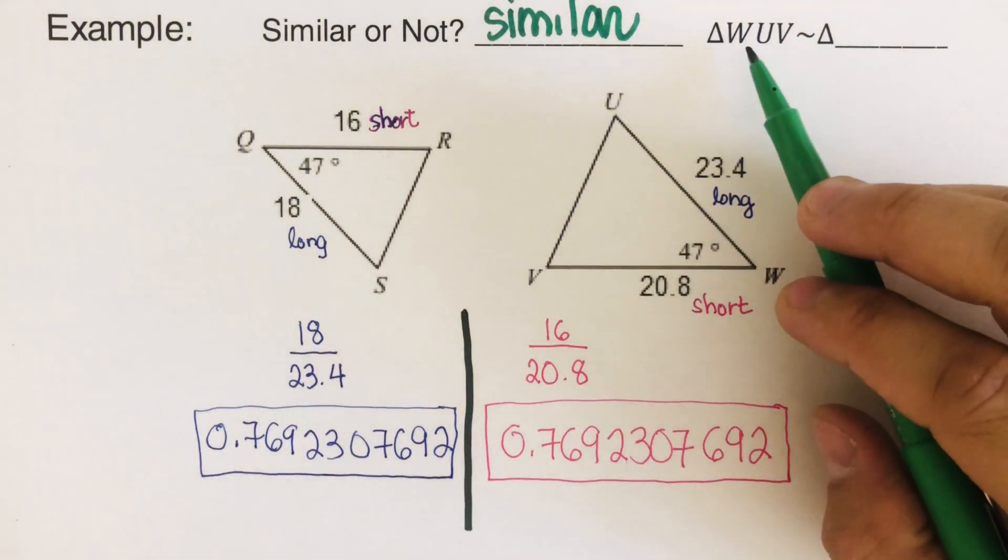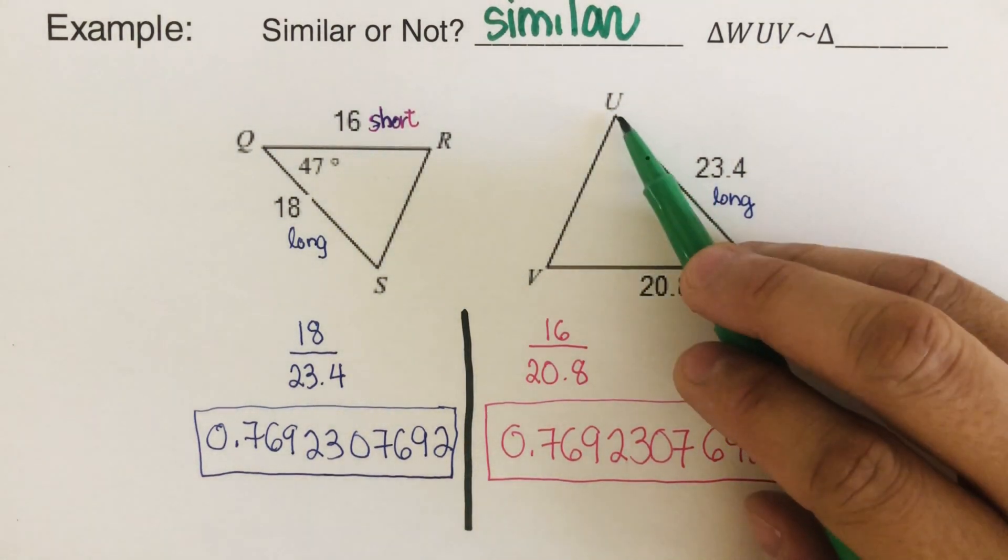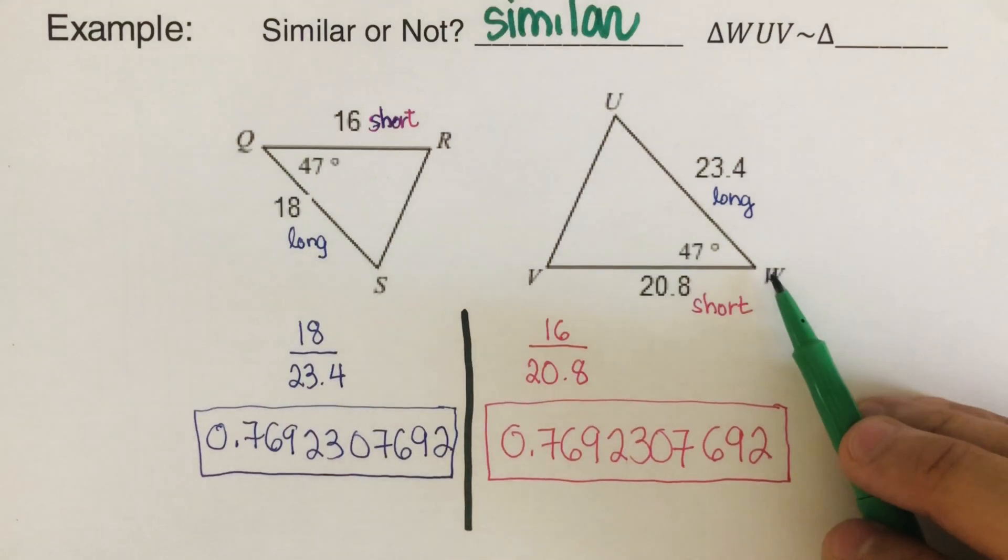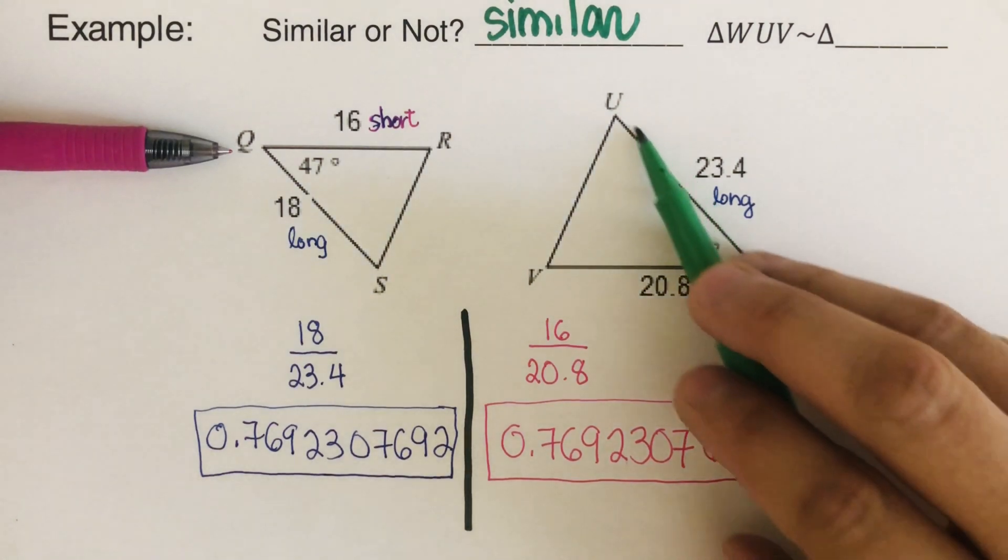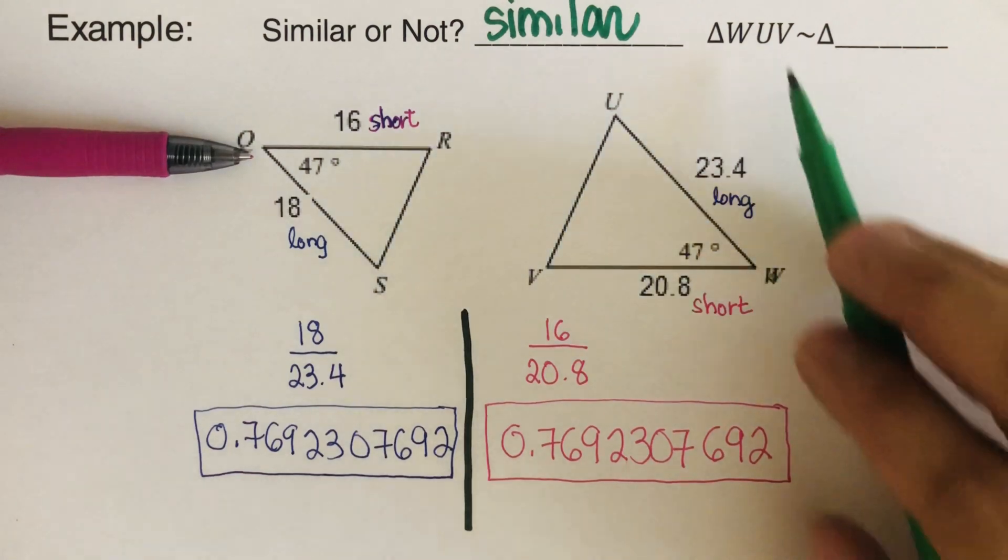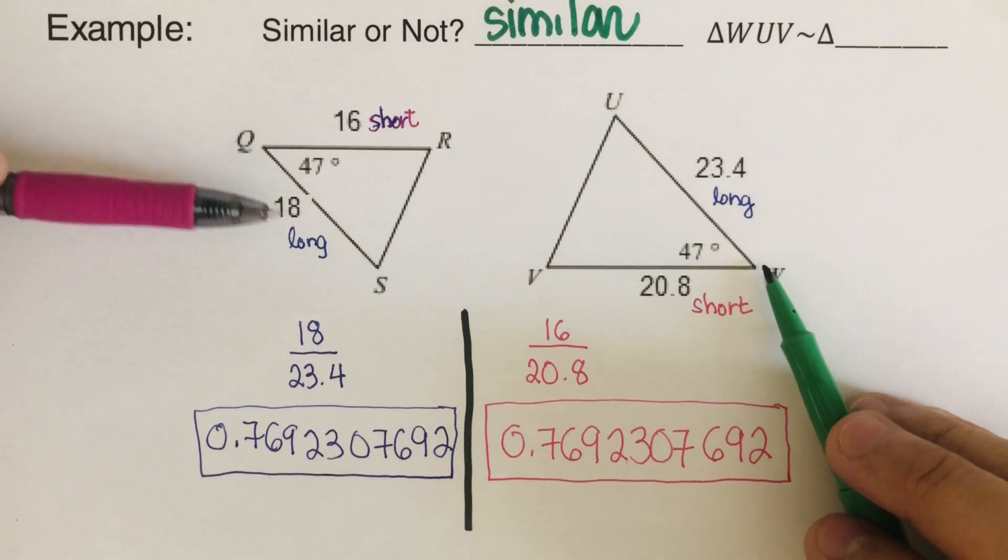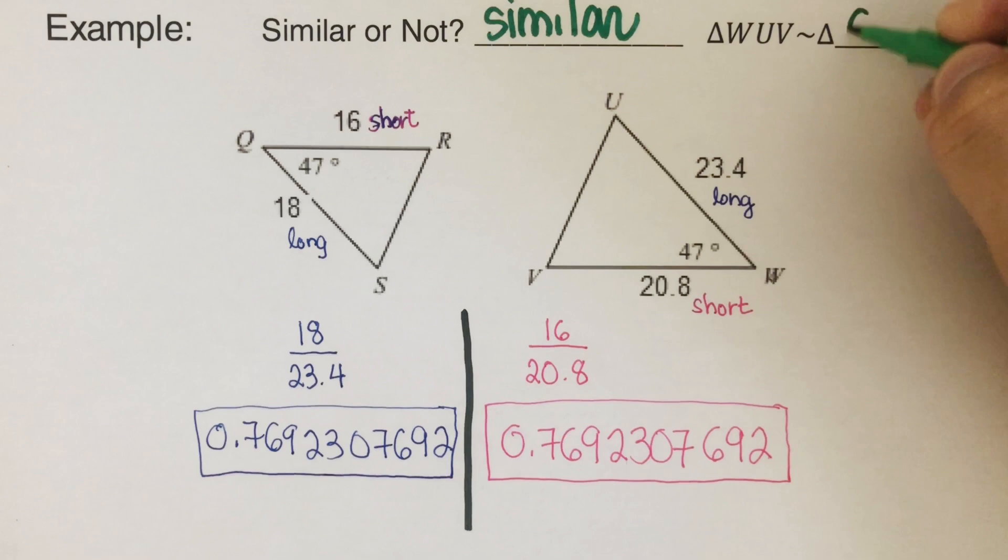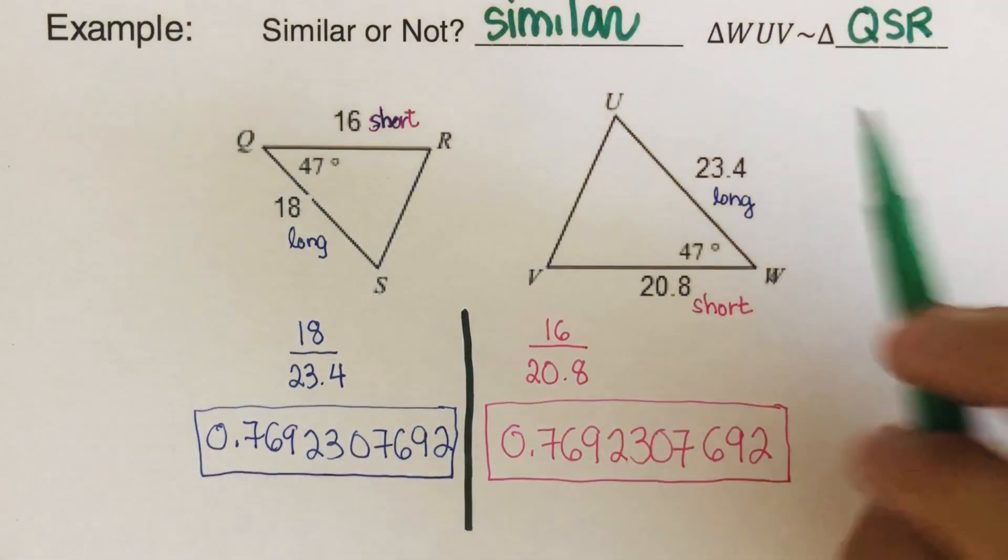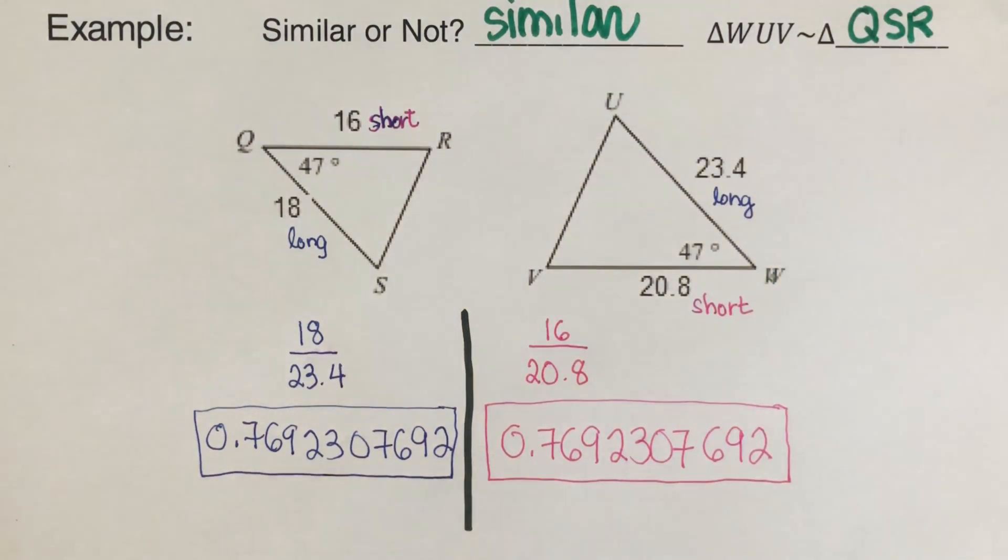Now we have here the similarity statement. So if we have WUV, so WUV. So what happens was from W, so the matching parts of W is Q. I go to the, I will pass through the long side. So that means I will do the same thing here because that's W-U-V. W-U-V. So that would be the long side is 18. So I go Q-S-R. So this is Q-S-R. So this is read as triangle WUV is similar to triangle QSR.